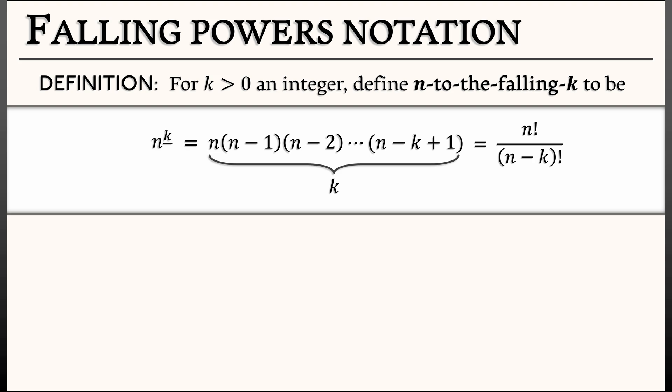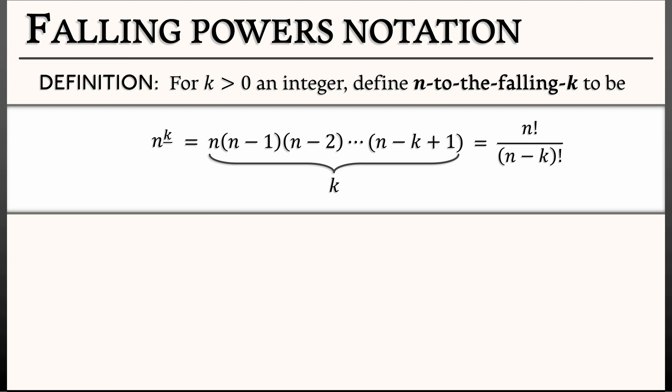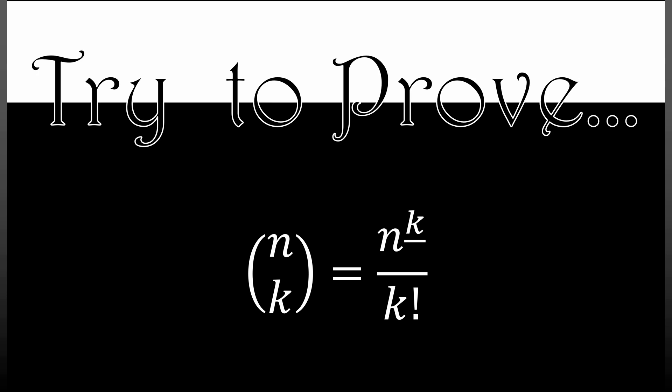Now, why do we do this? Well, it's not so clear at first, but here's a hint. Try to prove that there's a relationship between falling powers and the binomial coefficients. That is, try to show that n choose k is really n to the falling k over k factorial. And that's a hint as to why this is so important and so useful.